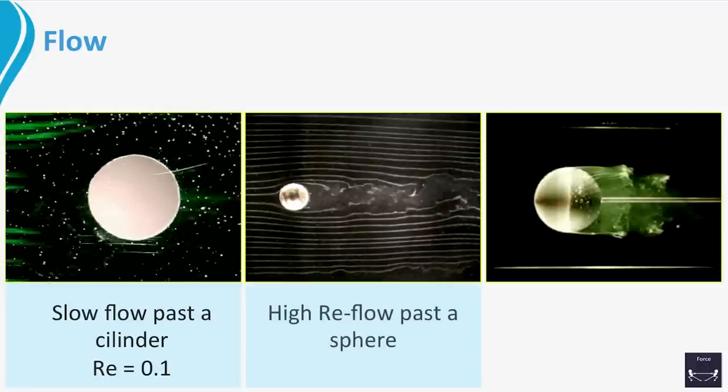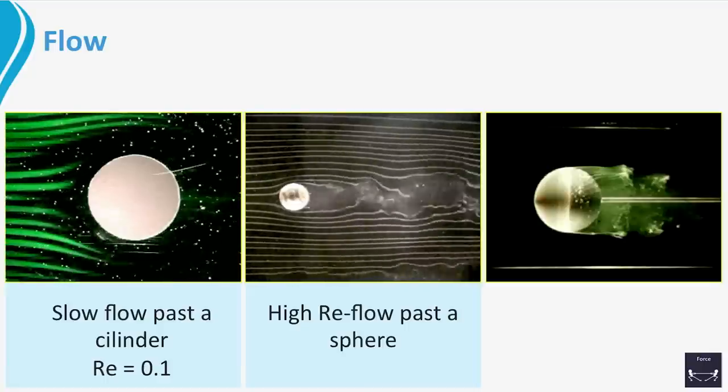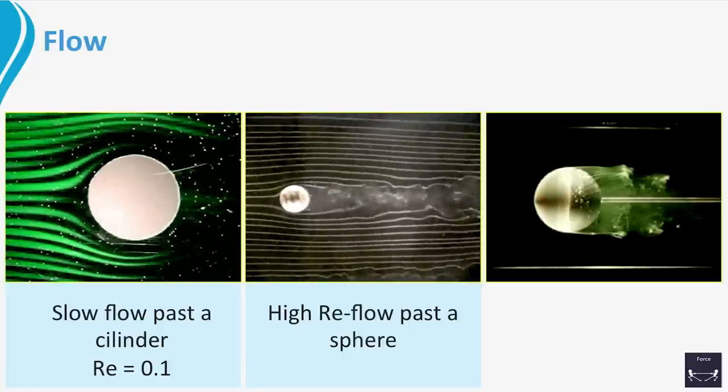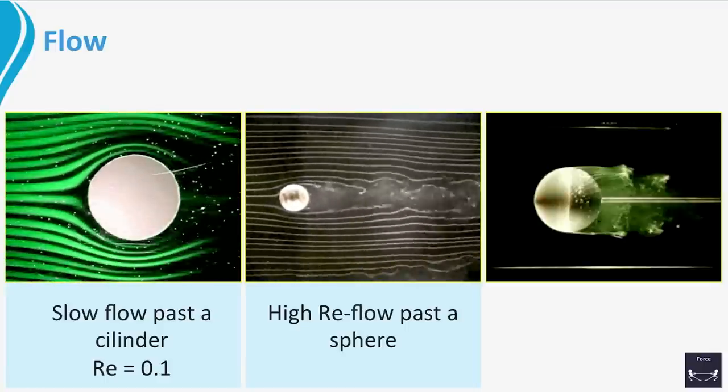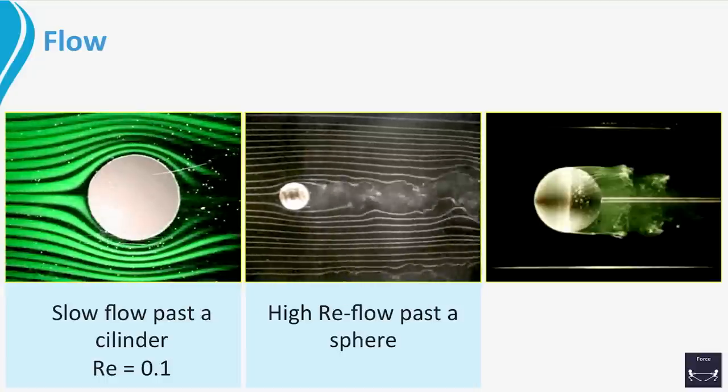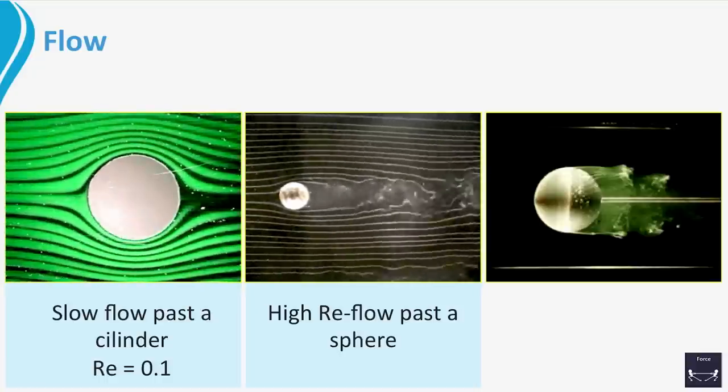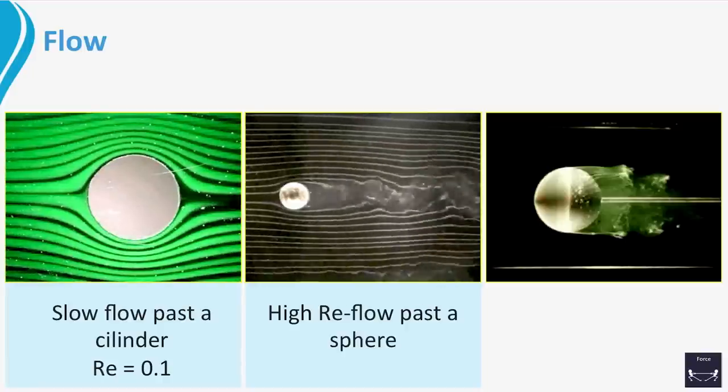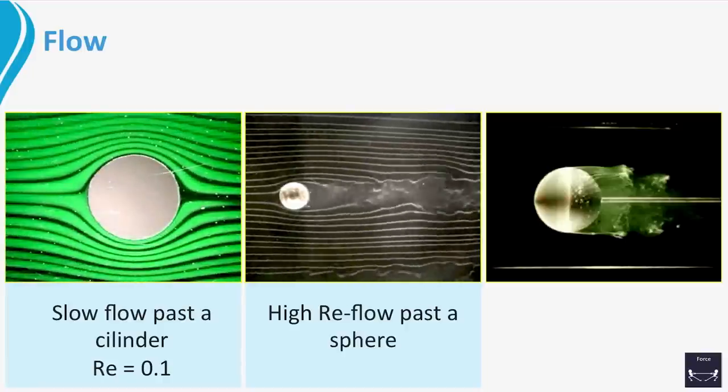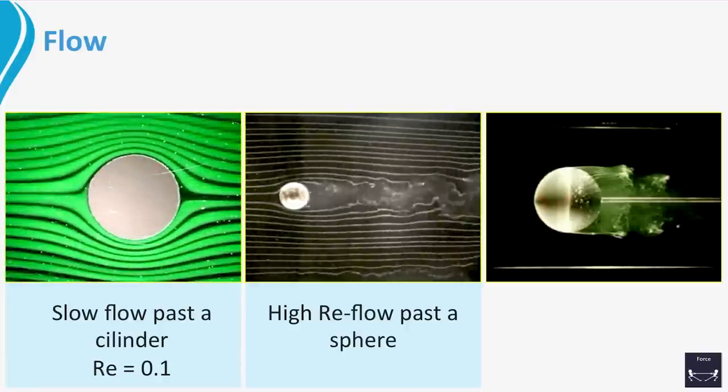In the second movie a ball is hanging in an air flow. The flow is again from left to right. Now we see that the flow overshoots the ball. It cannot follow the shape of the ball. In terms of physics it has too much momentum. As a consequence a wake is formed behind the ball.